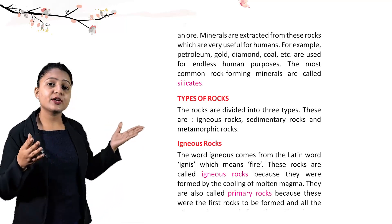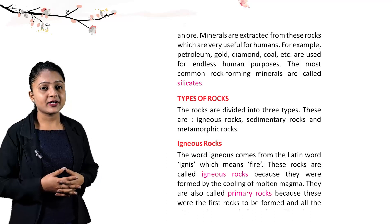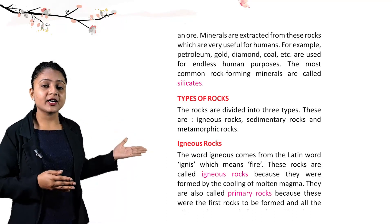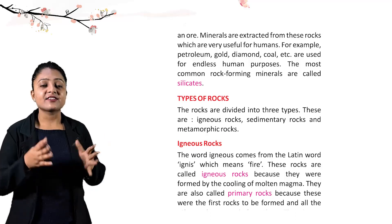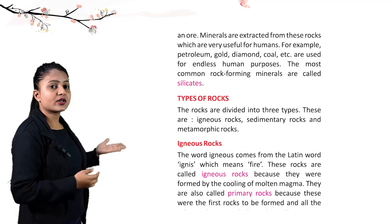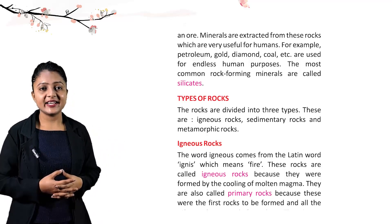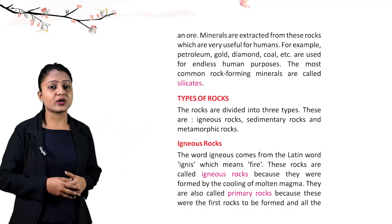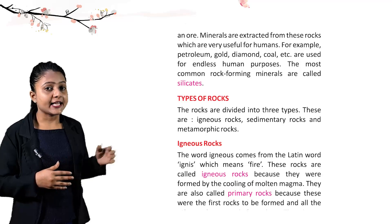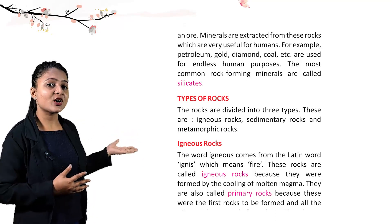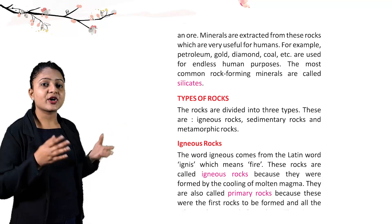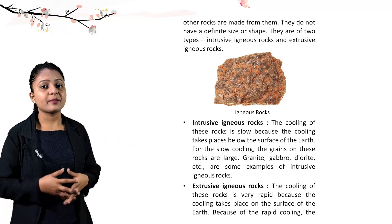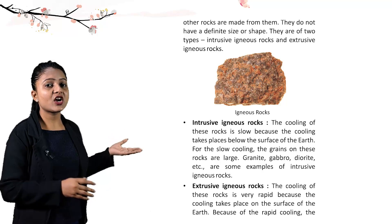Some minerals such as coal and petroleum are organic minerals because when plants and animals are buried inside the earth under pressure for a long time, they form fossil fuels, giving rise to minerals like coal and petroleum. The rocks are divided into three types: igneous rocks, sedimentary rocks, and metamorphic rocks. The word igneous comes from the Latin word 'ignis' meaning fire. These rocks are formed by the cooling of molten magma and are also called primary rocks, as they were the first rocks to be formed.